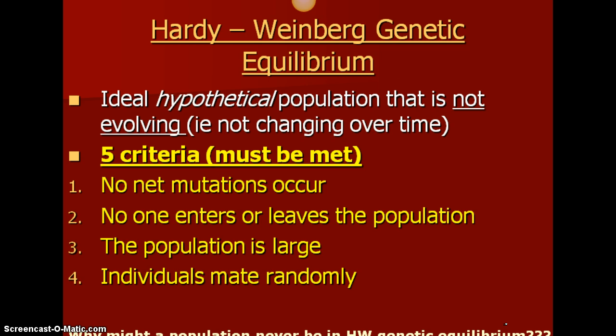Fourth, individuals mate randomly — there's no selection, so it's not like one organism is stronger and gets more opportunity to mate or fights for a mate. It's just random mating. Fifth, there's no natural selection. Is this possible? Not at all. We're going to go through those on another set of notes to look at what actually happens. This is your ideal situation, saying that we don't need evolution to happen, because ideally we've got a perfect population for the species.